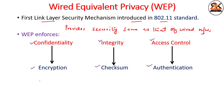For encryption, WEP encrypts data using an RC4-based stream cipher. We use RC4 stream cipher, which we have already studied in symmetric encryption. RC4 stream cipher is used for the encryption process, and we achieve confidentiality by using this key stream generation algorithm, that is RC4.